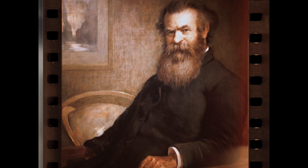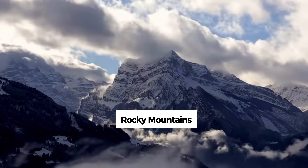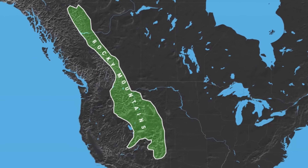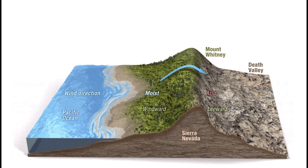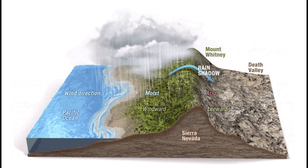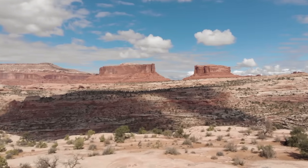A century and a half ago, John Wesley Powell identified the geographical explanation behind this North American law of nature: the Great Rocky Mountains. The Rocky Mountains are the third longest mountain chain in the world, stretching more than 3,000 miles from British Columbia in the north to New Mexico in the south, with peaks standing as high as 14,000 feet tall. They act like a gigantic wall, blocking moisture carried by clouds from the Pacific Ocean and preventing most rain from passing beyond them. This phenomenon is known as the rain shadow.